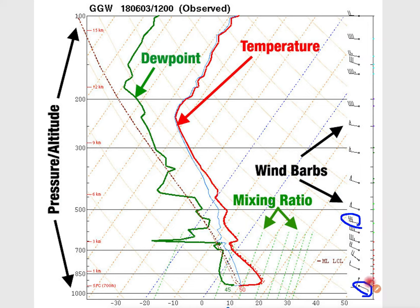This promotes wind shear. You've heard the term bulk wind shear — this is basically the amount of change of wind direction as you go higher in the atmosphere. And this can cause rotation in thunderstorms if they are present.